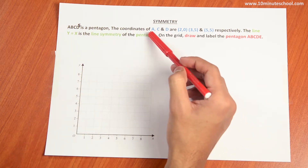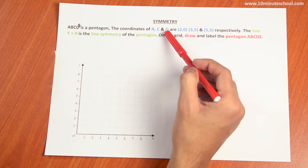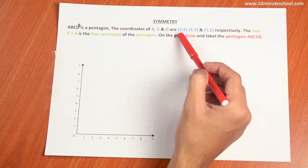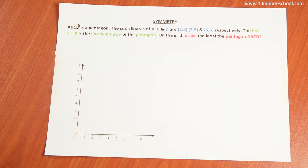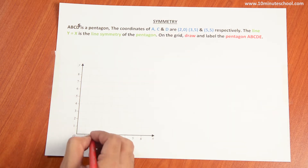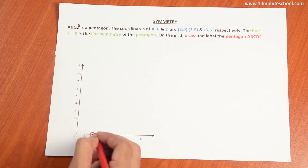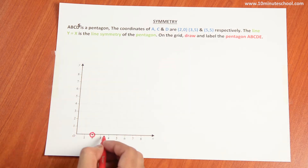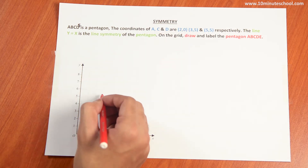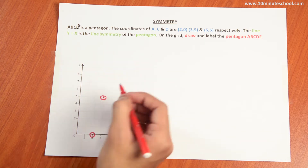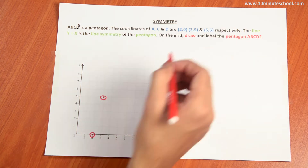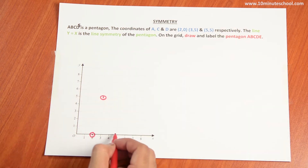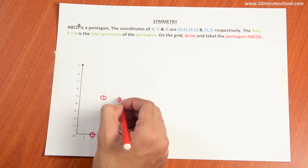The coordinates A, C, and D are given. The coordinates are 2 and 0, which is this one. The second is 3 and 5, which is this one. The third one is 5 and 5, which is this one.